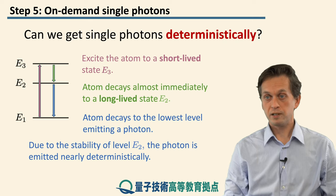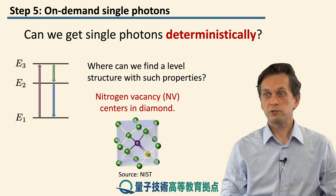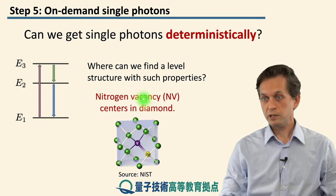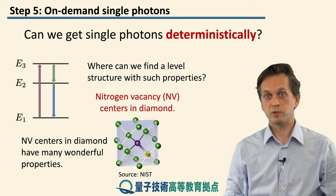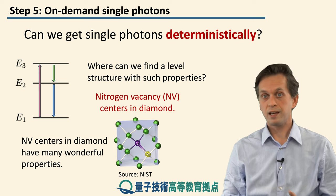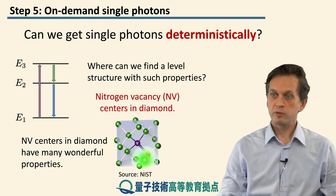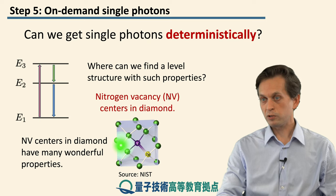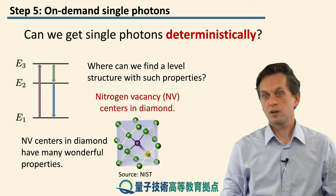Do such materials exist that have this property? In fact, yes. One example is known as nitrogen vacancy (NV) centers in diamond. This particular material has many nice properties that are very useful in quantum information processing and quantum communication, and we will come across it again and again. Basically, you have a crystal structure — the green dots represent carbon — and you knock one of the carbons out and replace it with a nitrogen, and knock another out to create a vacancy. These systems have very long coherence times, so we will see them again when we talk about quantum communication protocols and also quantum memories.